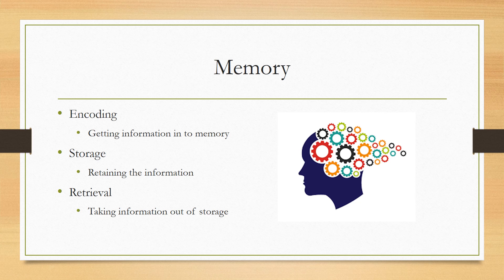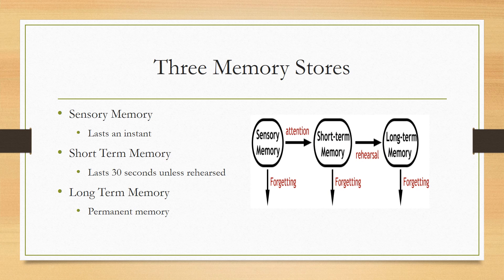After children encode information, or take the information in, they need to store it. This is called the model of three memory stores. Here they can keep this information for different lengths of time. It can be a sensory memory which only lasts for an instant. It can be a short-term memory which lasts 30 seconds unless rehearsed. Lastly, it can be a long-term memory, which is when information stays for a long period of time in an almost permanent state.